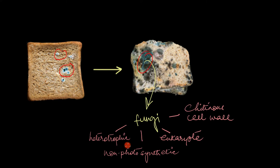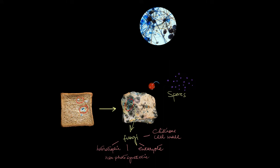So what are these things, these green-black patches all over your bread? These are fungi. Heterotrophic, non-photosynthetic eukaryotes with cell walls made up of chitin. These fungi got on this bread through something called spores.